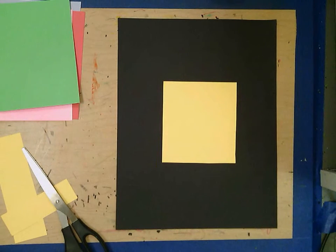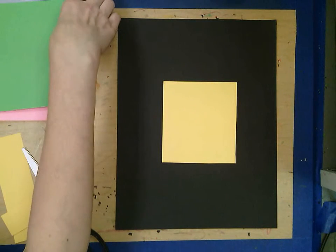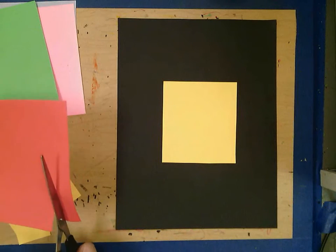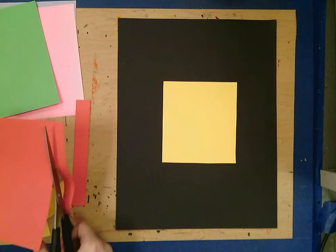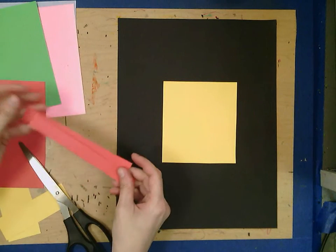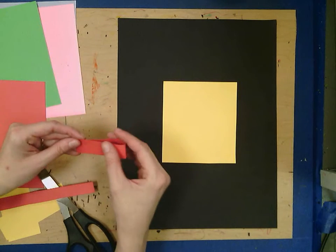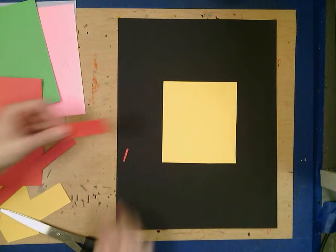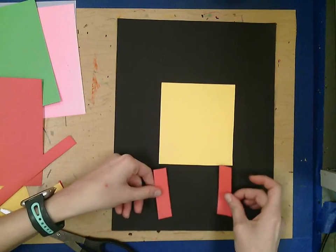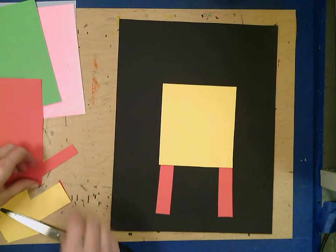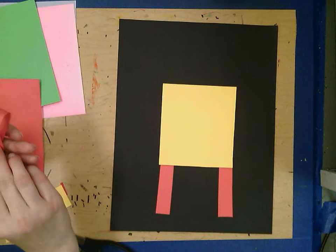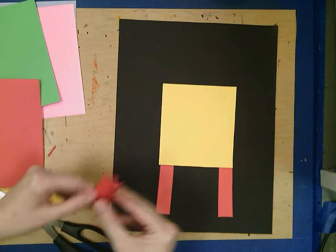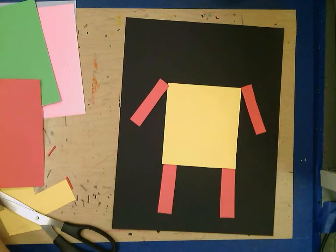Then you can start adding details. I think my robot would have some red arms and legs, so I'm going to make those. And here's a trick: if you need to make something half, you can fold the paper before you cut it. And now I have two legs and two arms.